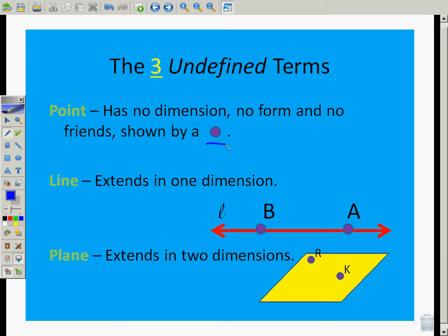And so we might see on a picture, we might see A, well, we're using a capital letter. We're using a capital letter to name it. So a single capital letter names a point.